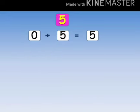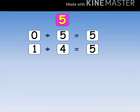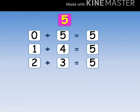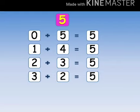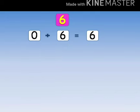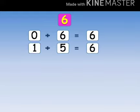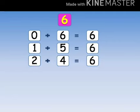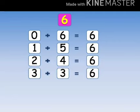Table for 5: 0 plus 5 equals to 5, 1 plus 4 equals to 5, 2 plus 3 equals to 5, 3 plus 2 equals to 5. Table for 6: 0 plus 6 equals to 6, 1 plus 5 equals to 6, 2 plus 4 equals to 6, 3 plus 3 equals to 6.